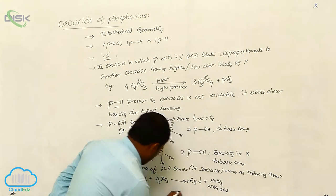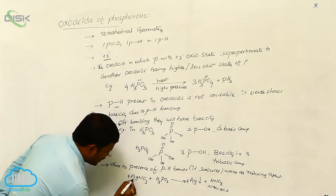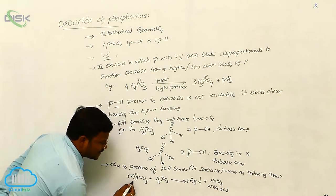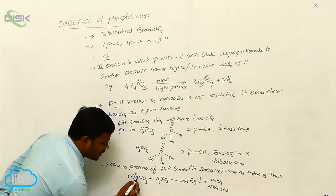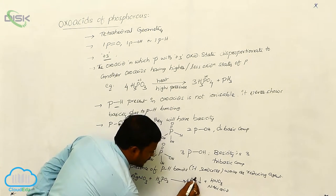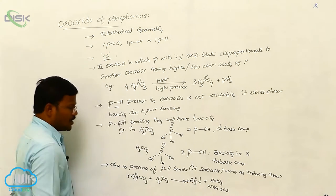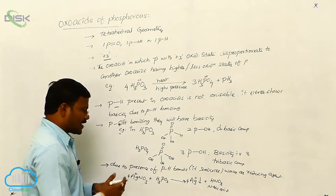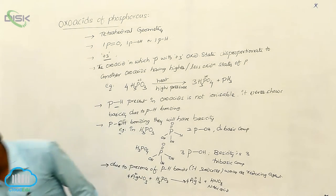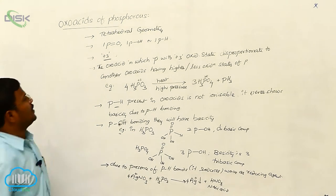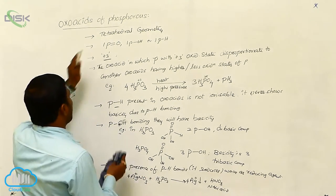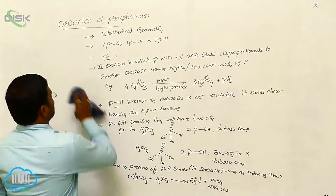That means Ag in the +1 oxidation state in silver nitrate is reduced to Ag0. So reduction takes place upon silver nitrate. This is what the oxoacids of phosphorus are about.